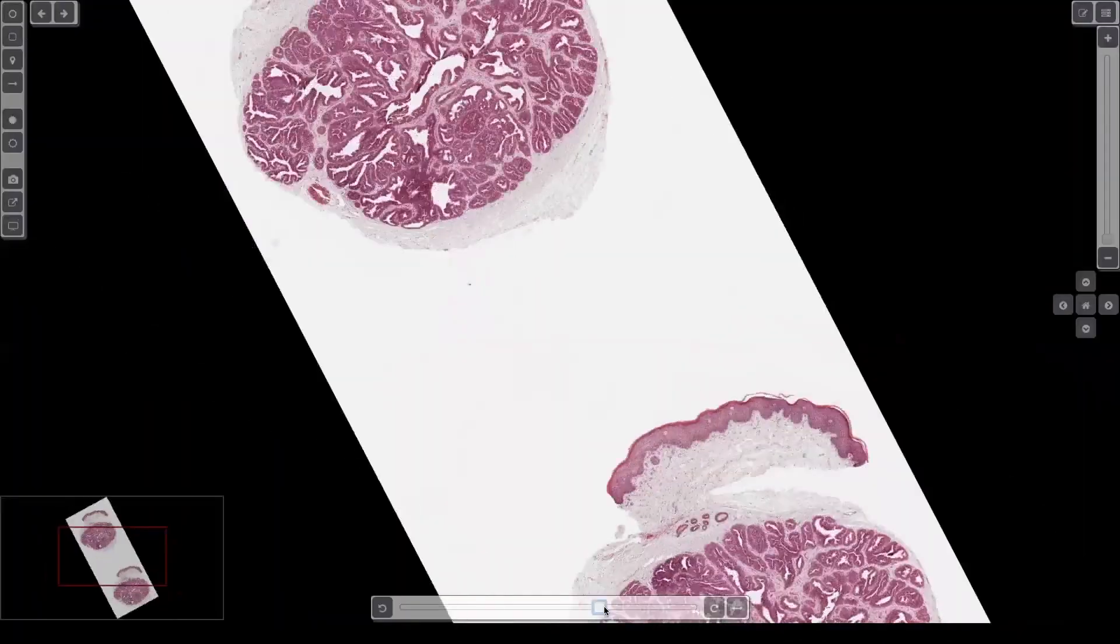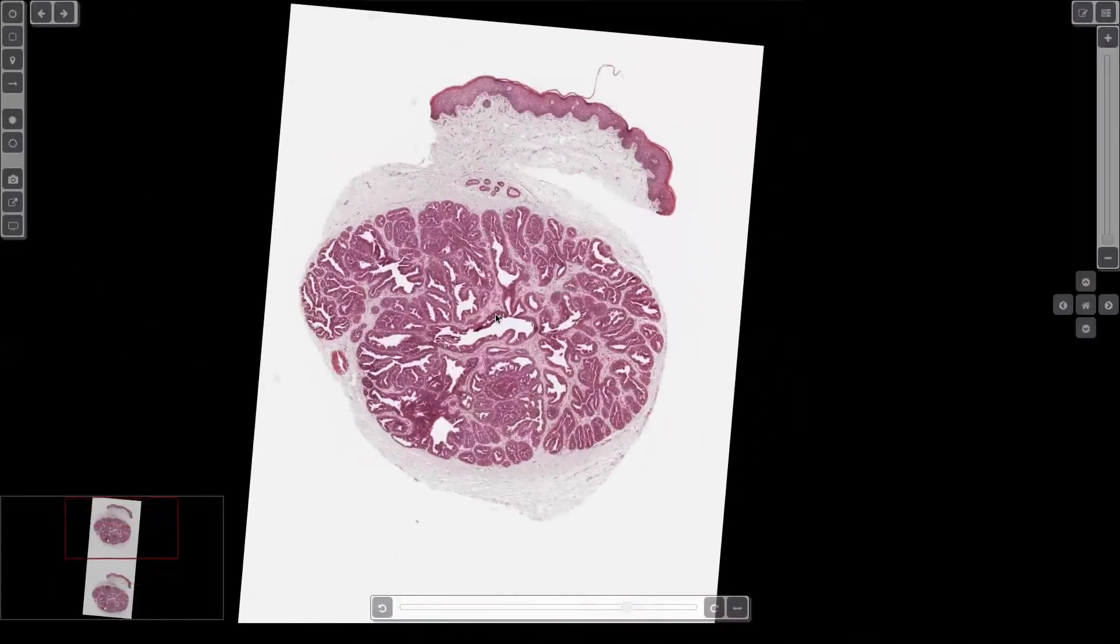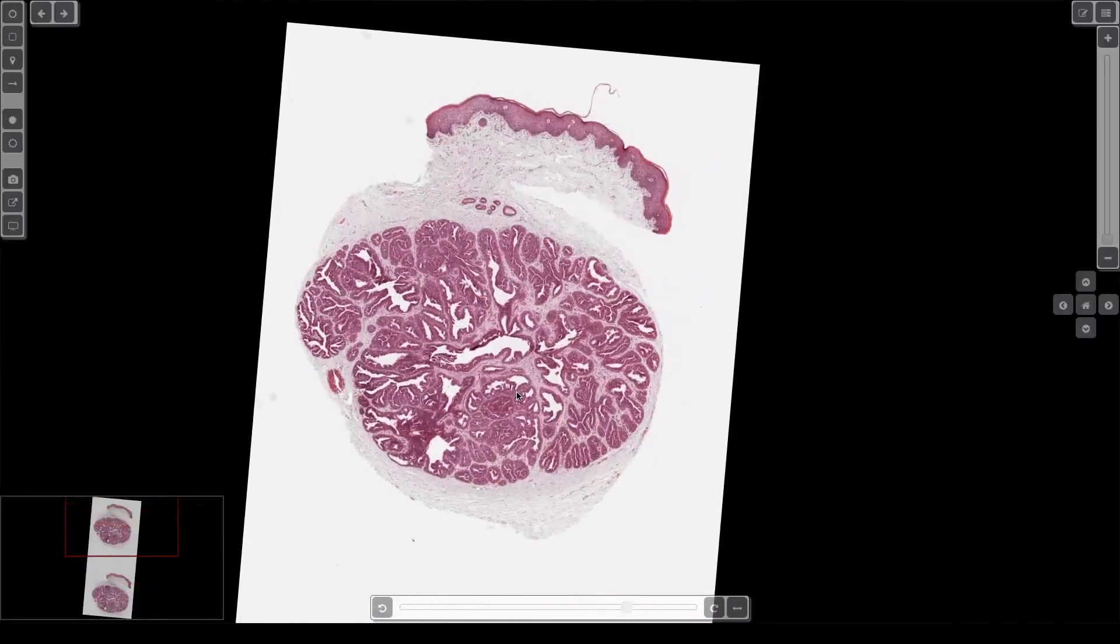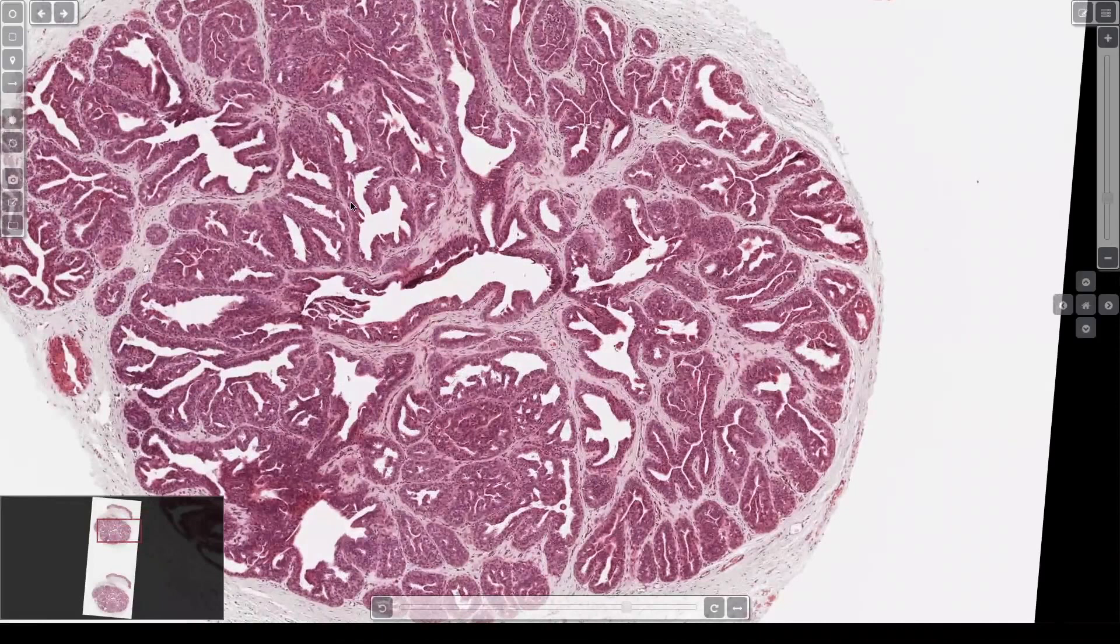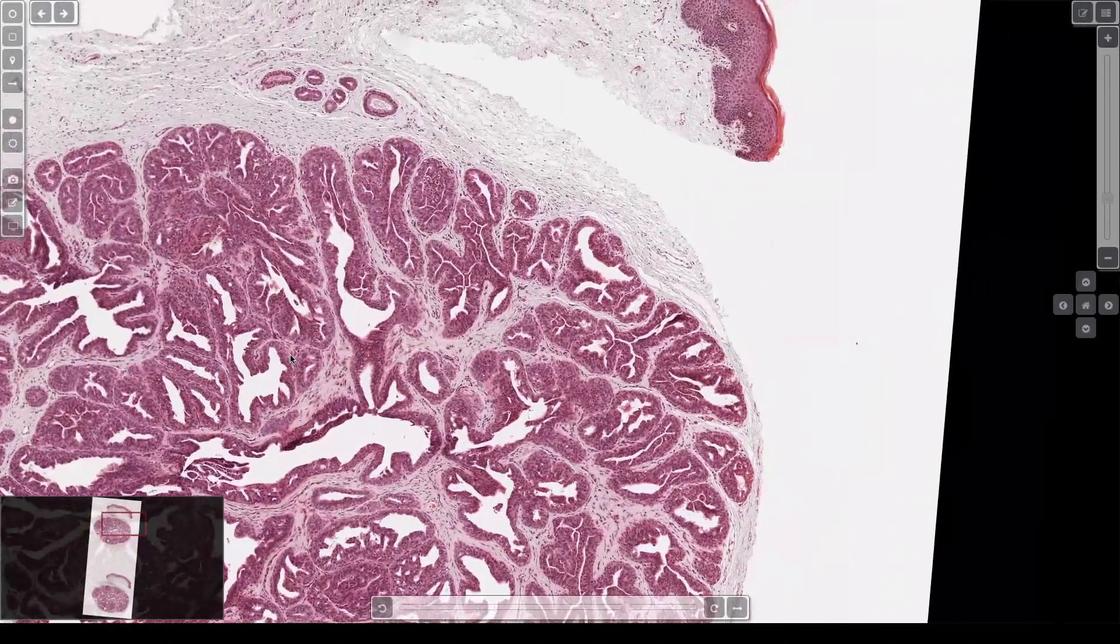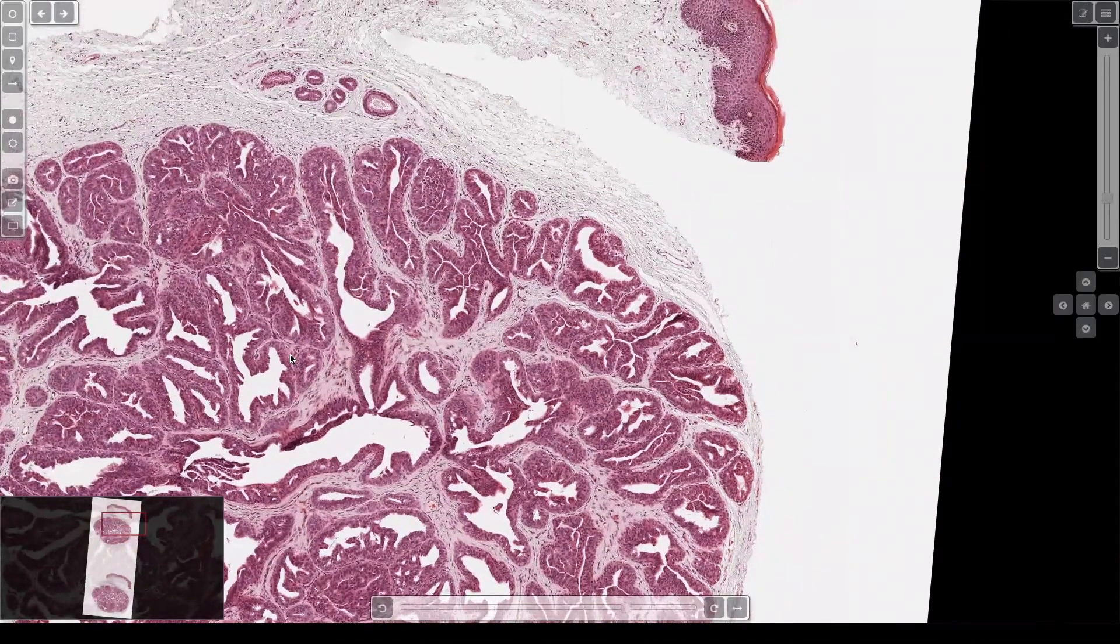And here is a lesion that's a nodule down in the deep dermis, relatively circumscribed and it's got cystic spaces and lots of papillary structures folding into the middle of the cystic spaces.